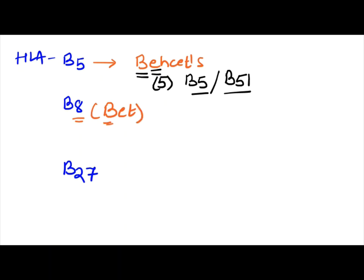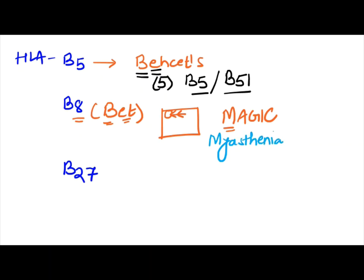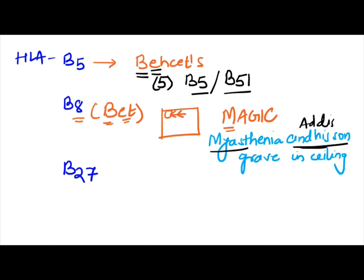Then we have B8, which can be read as 'bet' — as in, I bet you it would be a magic if you see somebody's grave which is in the ceiling. So grave and ceiling is magic. The B8 mnemonic is MAGIC: M for Myasthenia gravis, A for Addison's disease, G for Graves' disease, I for (its son), C for Celiac disease. So myasthenia, Addison's, Graves', and celiac are all associated with HLA-B8.